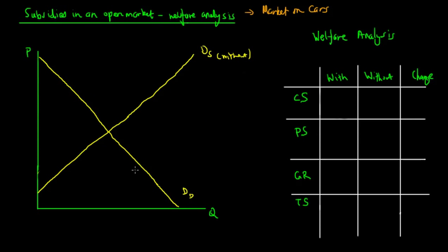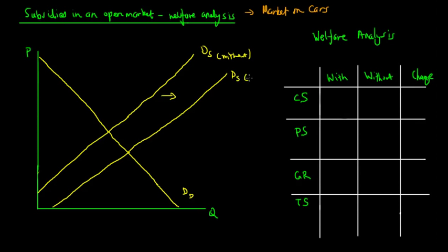With a subsidy, the domestic supply curve shifts to the right. This is due to a decrease in production costs and a more protected profit margin provided by the government. When the government gives out subsidy payments to businesses, they are able to invest in capital, maintain their profit margins, and operate at a higher quantity.